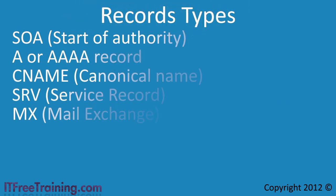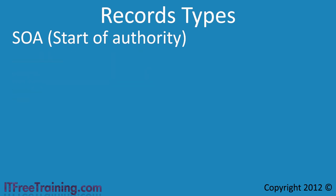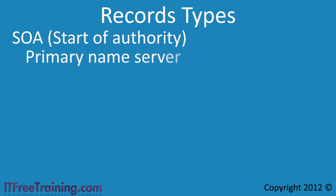With DNS there are a number of different record types. This is by no means a complete list but does cover the more common types. The first record is Start of Authority, or SOA. The SOA record indicates the DNS server with the best source of information for that zone — this should be the primary name server, which has the most authority to make changes in the domain or answer questions regarding it.